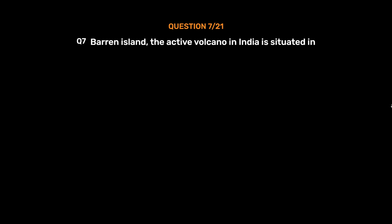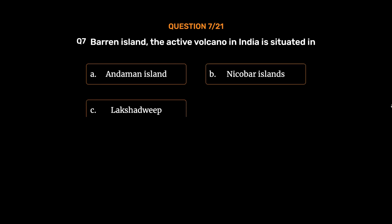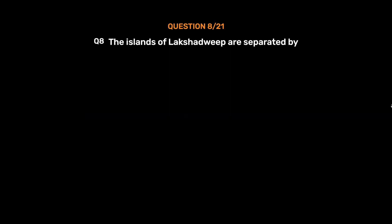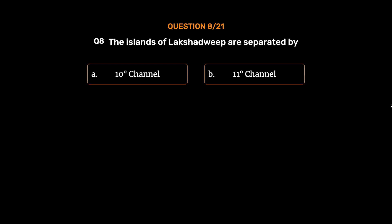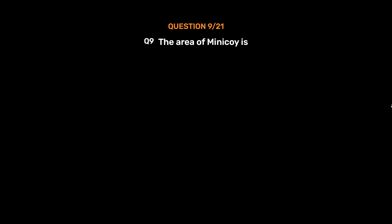Question number 7: The islands of Lakshadweep are separated by — Option A: 10 degrees channel. Option B: 11 degrees channel. Option C: 12 degrees channel. Option D: None of them. The correct answer is Option B, 11 degrees channel.